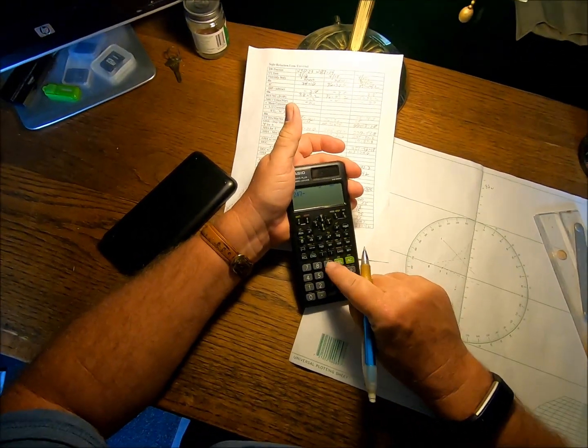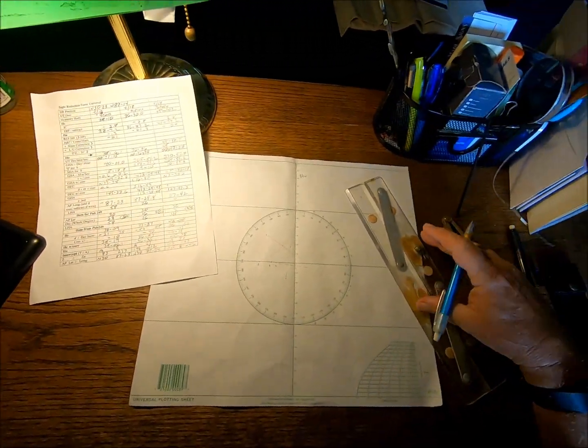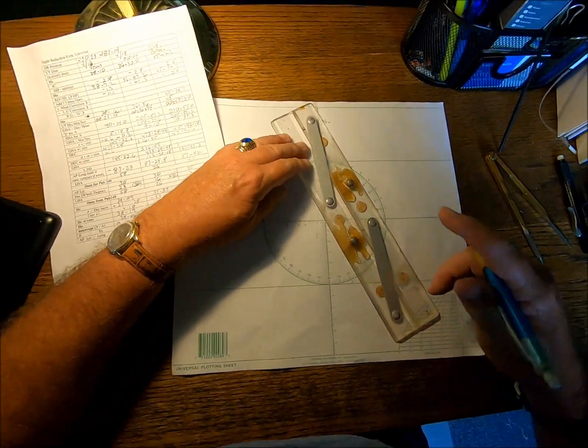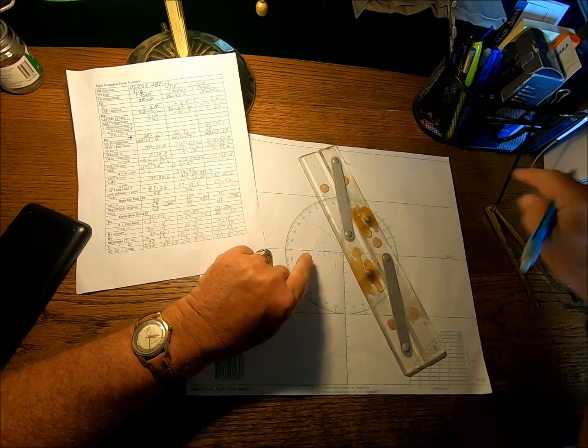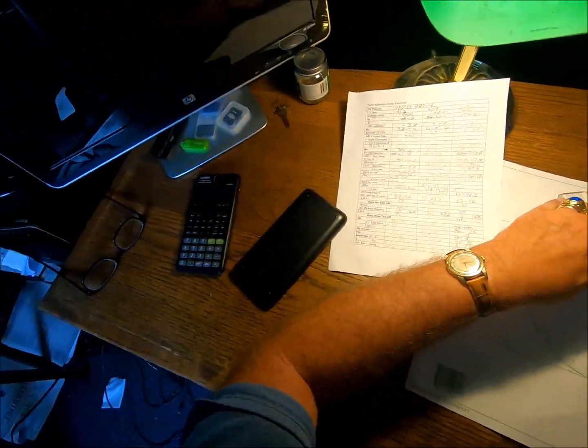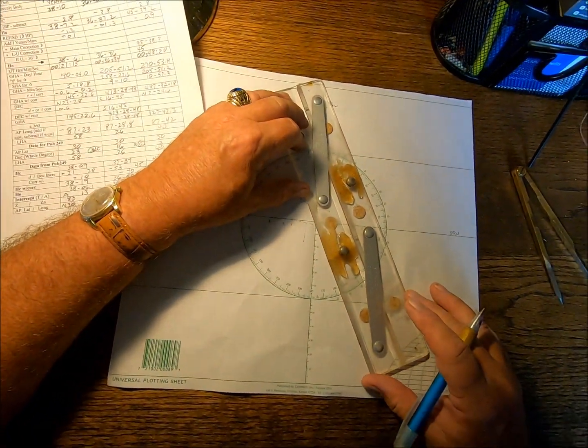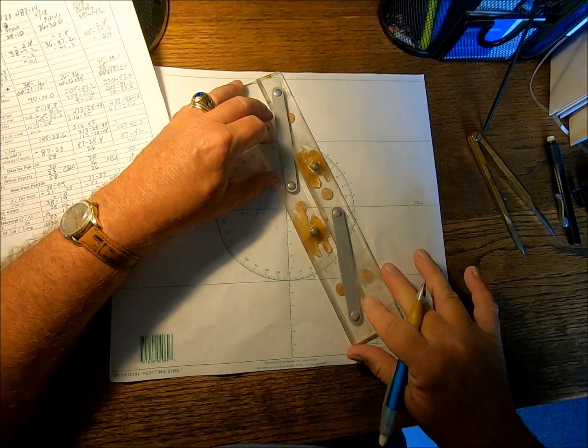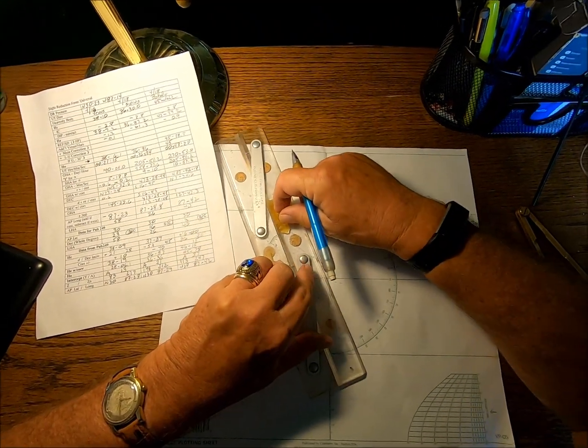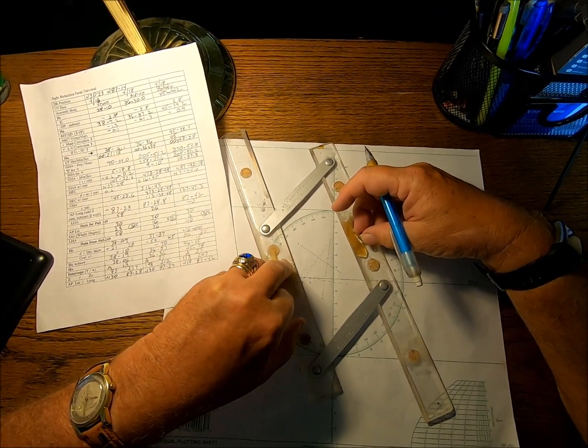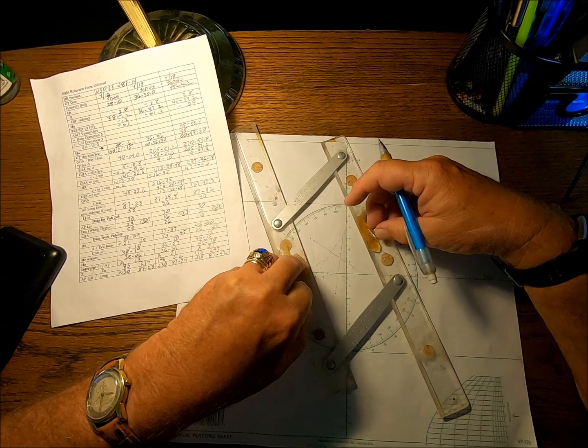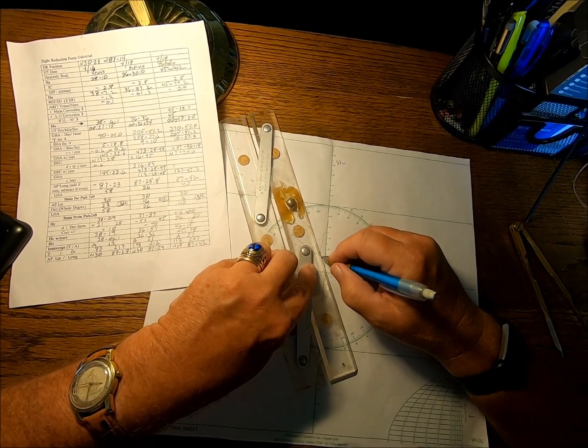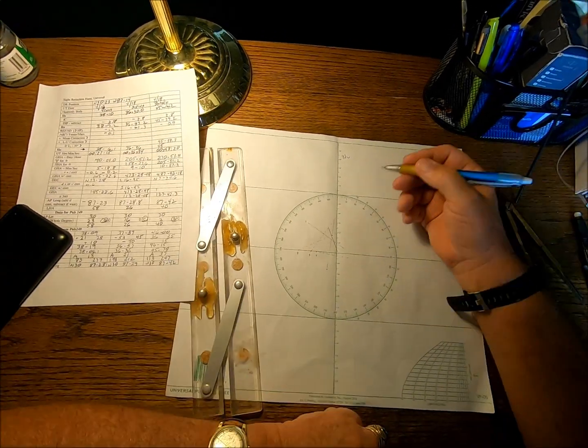247 minus 90 is 157. So, now we come up here and look for 157. That will be our line of position. Remember, it's 90 degrees off of our azimuth line. So, that's 157. And then, we come up here from our little tick mark.